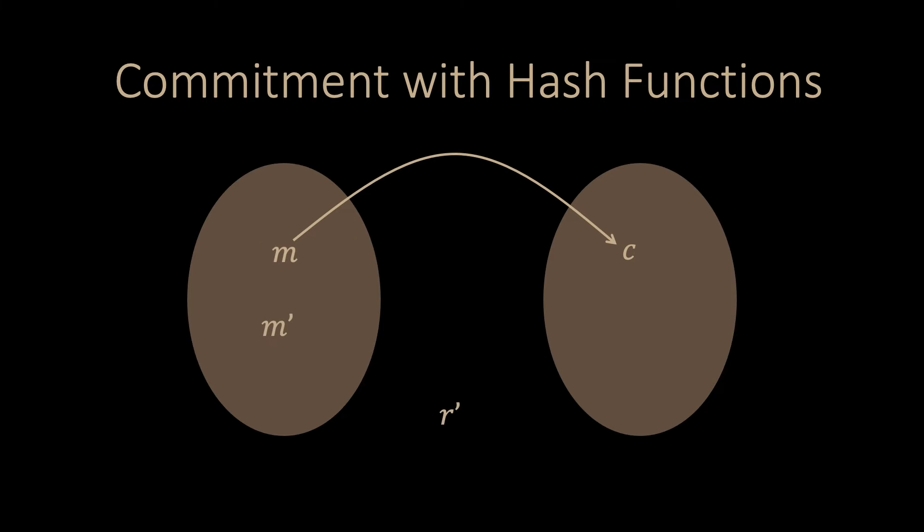The main argument comes from collision resistance of hash functions. To change the commitment, one needs to find a collision. In principle, it is possible to find another input so that you have a collision, but if the hash function is cryptographic, then this is computationally too expensive. That's why we say that the protocol is computationally binding.